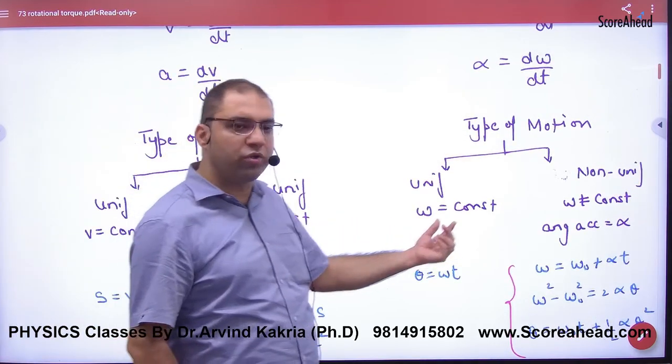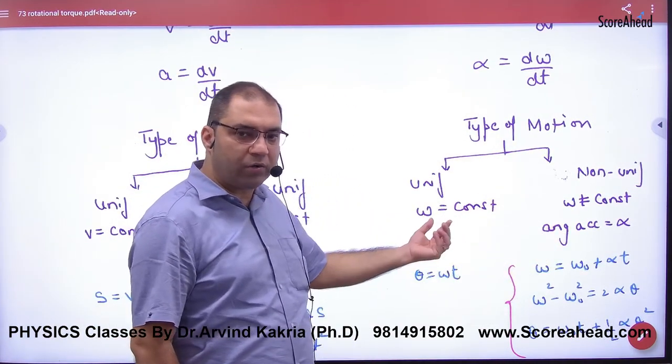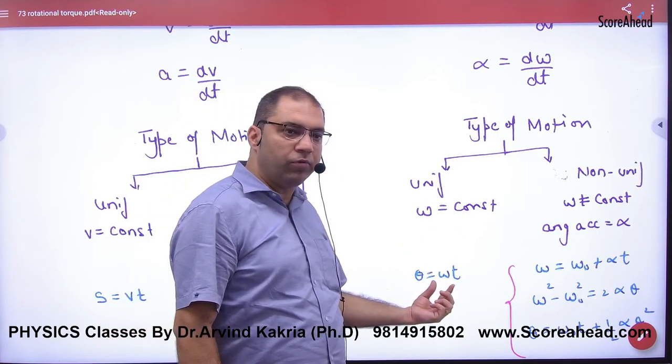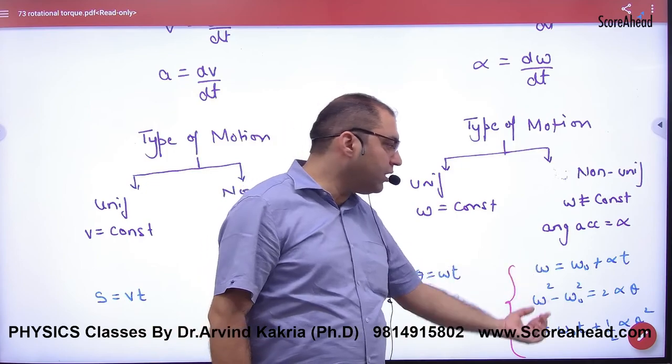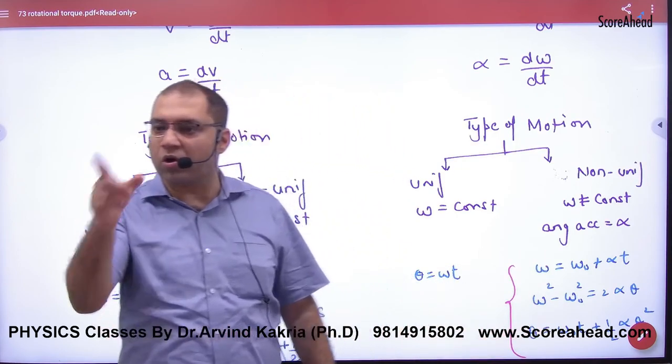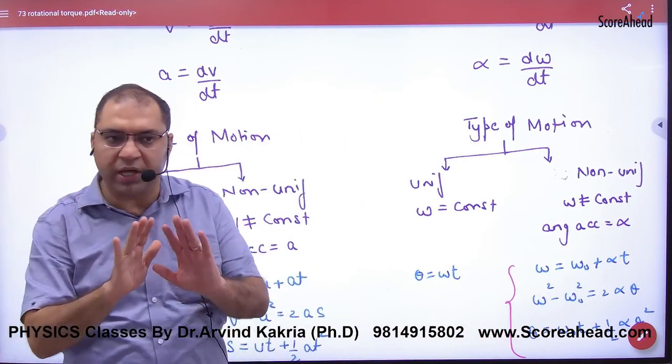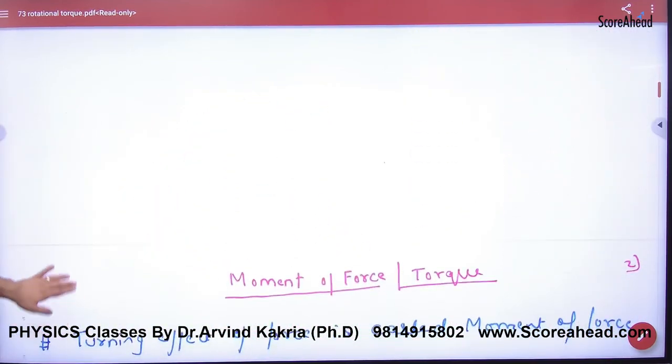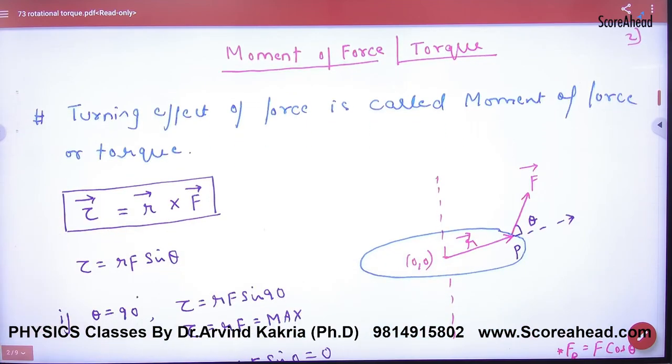In uniform motion, ω is constant, so θ = ωt. These equations of motion for circular motion we have already discussed - this is the same concept. Now, the main thing is the moment of force, or torque.